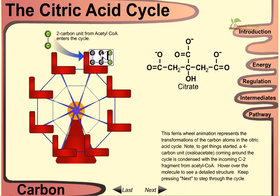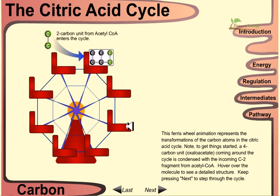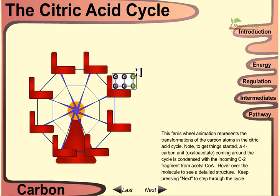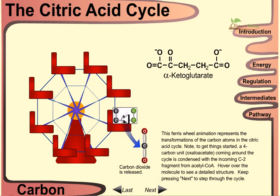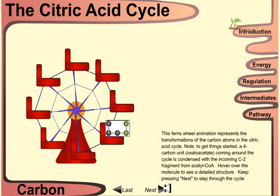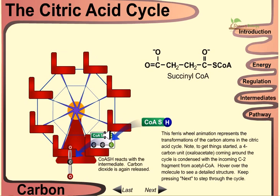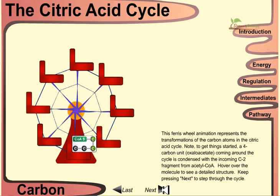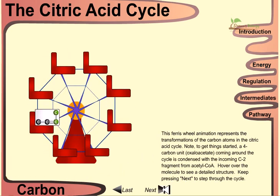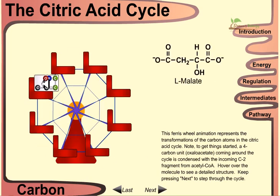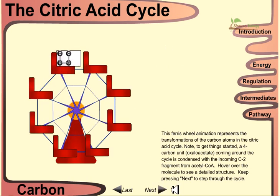Citrate has six carbon molecules, and isocitrate also has six carbons. Then alpha-ketoglutarate has five carbons — one carbon dioxide is released. Succinyl-CoA is four carbons, and another carbon dioxide is released. Then we have four-carbon succinate, four-carbon fumarate, four-carbon malate, and finally oxaloacetate, which is four carbons again.